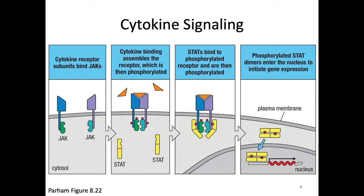The kinase listed here is called JAK. In reality there are four different kinds of JAKs: JAK1, JAK2, JAK3, and TYK2 — because why could anything be simple? So you just need to know it's a JAK here.